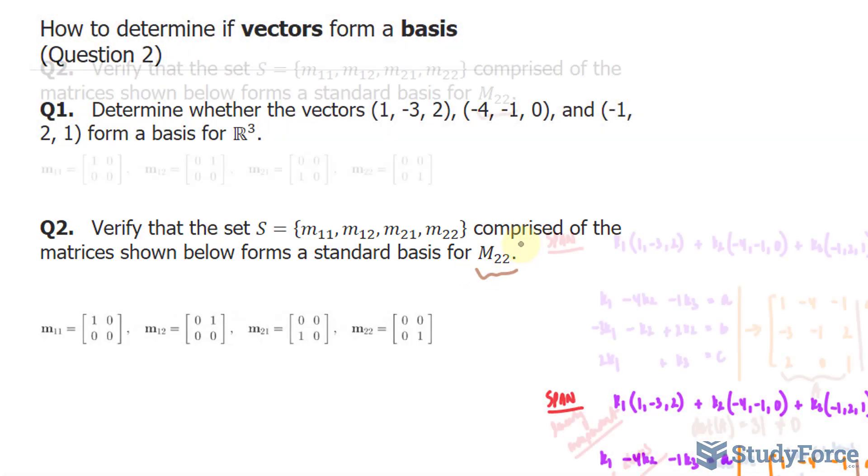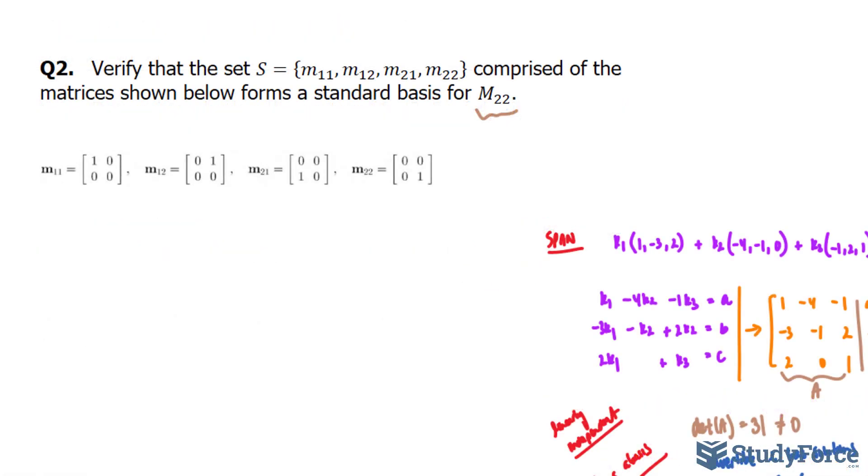Just like in question number one, we have to prove if it spans, and we can do that by multiplying each of these matrices to a constant, a scalar if you will, and making the sum equal to a fifth matrix that has the elements A, B, C, and D.